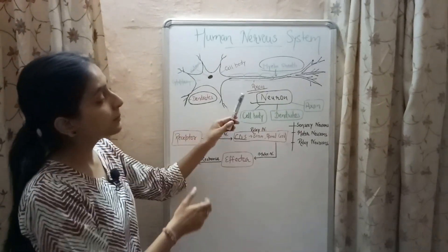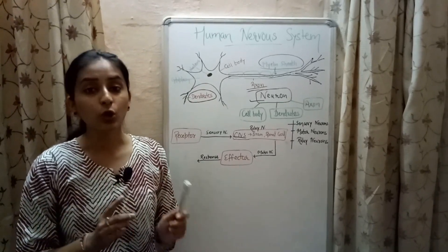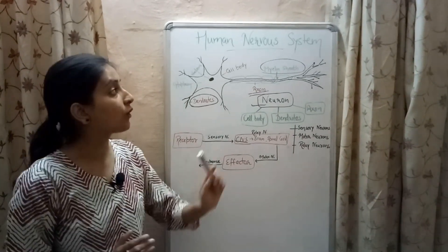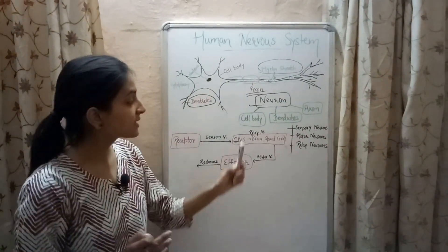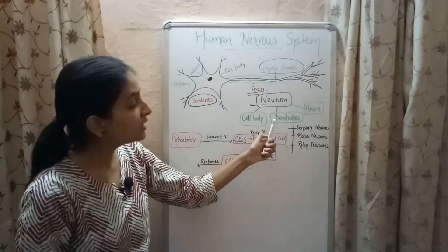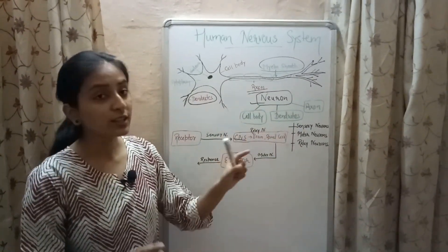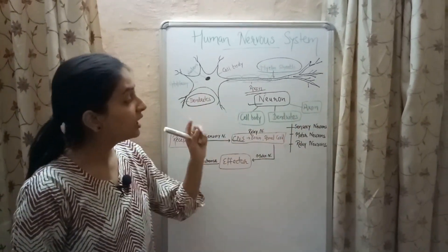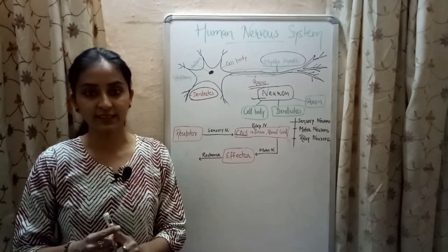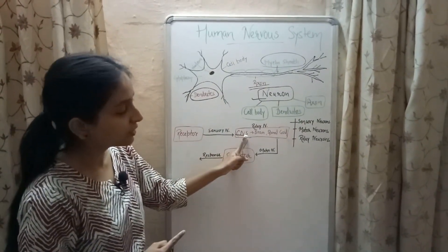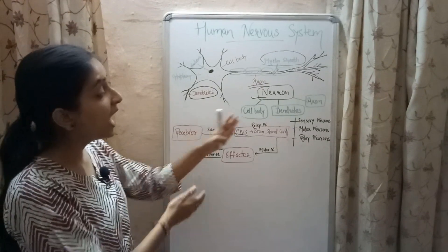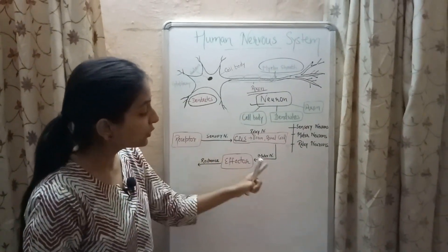To quickly revise: neurons are the basic unit of the nervous system, which controls all the activities of the body. Neurons consist of three parts — cell body, dendrites, and axon. Cell body contains nucleus and cytoplasm; dendrites are the short thin fibers and axon is the long fiber arising from the cell body. Sensory neurons carry signals from the receptors to the central nervous system; motor neurons carry nerve impulses from the central nervous system to the effectors; and relay neurons connect sensory neurons to motor neurons.